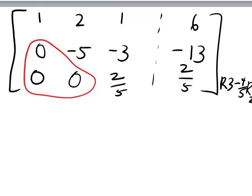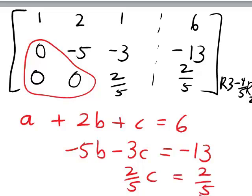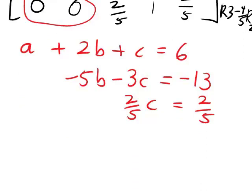We now rewrite our equations. The unknowns are A, B, and C in columns one, two, and three of the tableau. The first row gives A plus two B plus C equals six — that was not changed. The second row gives negative five B minus three C equals negative thirteen. And the third row of our final tableau tells us that two fifths times C equals two fifths. We are now ready to solve these equations for A, B, and C.